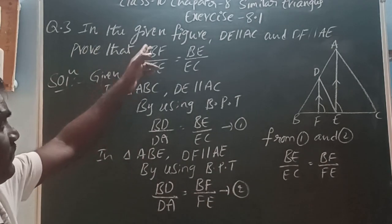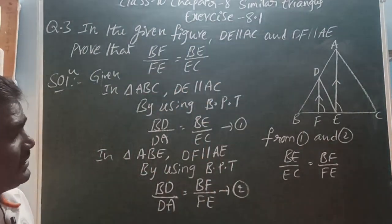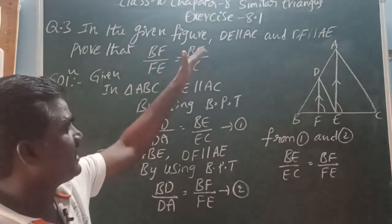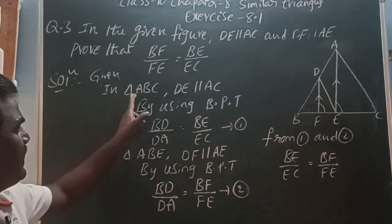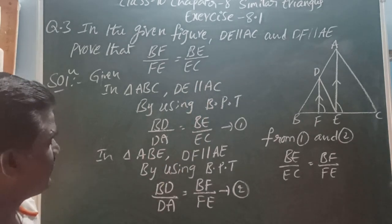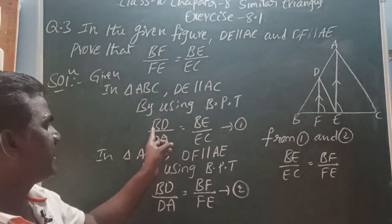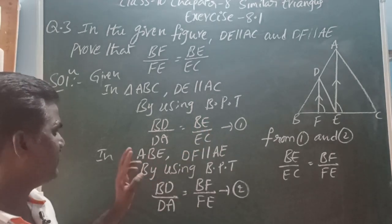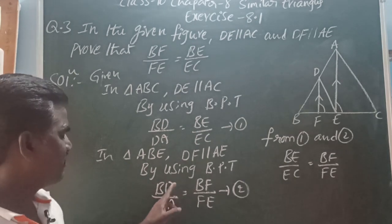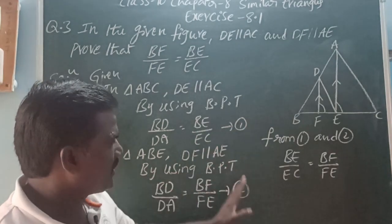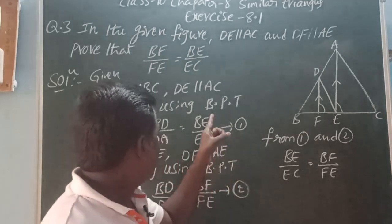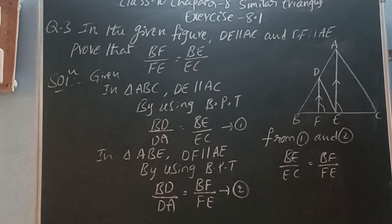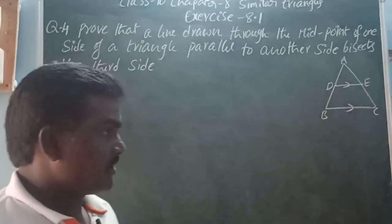So what is being asked: in the given figure DE is parallel to AC and DF is parallel to AE — prove that BF/FE is equal to BE/EC. In triangle ABC, DE is parallel to AC, so by BPT: BD/DA = BE/EC (equation 1). In triangle ABE, DF is parallel to AE, so BD/DA = BF/FE (equation 2). From one and two, BE/EC is equal to BF/FE. Hence proved.